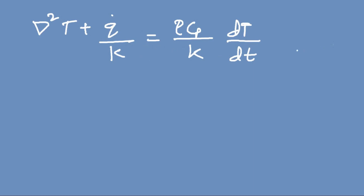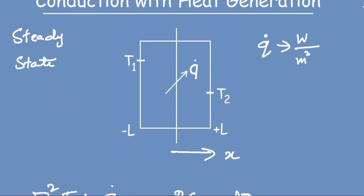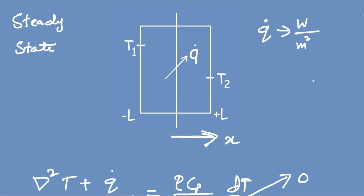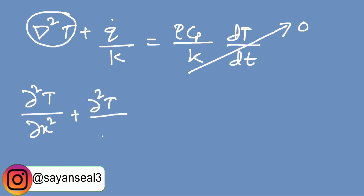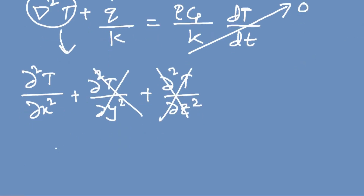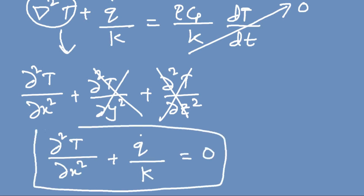We impose certain constraints. Since this is a steady-state problem, the time derivative term becomes zero. Also, this is a one-dimensional problem — we only consider the x-axis, so the y and z terms drop out. The simplified differential equation becomes: d²T/dx² + q_dot/k = 0.